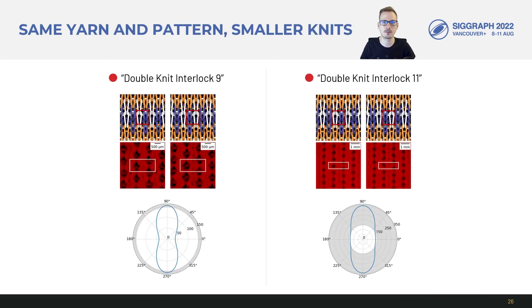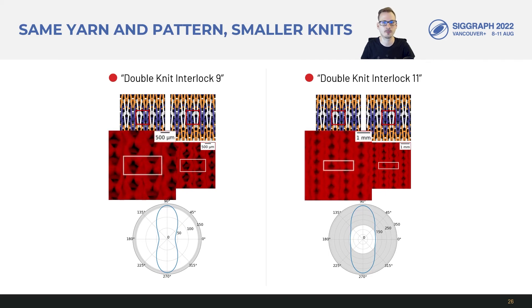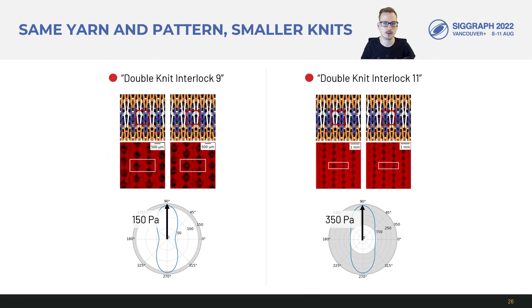But even if we keep the same yarn and also the same pattern there can be different fabric behaviors. In this case we have two fabrics that differ just by the scale of their knit loops. The double knit interlock 11 on the right has loops that are about twice as large. As a result it has a significantly boosted stiffness. So compared to the 150 Pa on the left we have 350 Pa on the right.